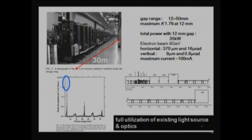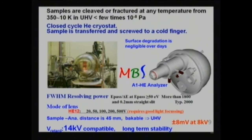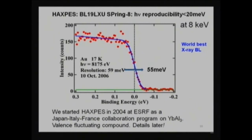This undulator photograph shows it is 30 meters long. The first-order and third-order harmonics are rather strong, and one can cover from 7 keV up to 25 keV or so. We are also using the high-energy photoelectron analyzer — an MB Scientific analyzer with stability of 8 meV at 8 keV. This is the Fermi surface of gold measured at 17 Kelvin, with energy resolution around 55 meV at 8 keV. The energy reproducibility for a day is better than 20 meV.